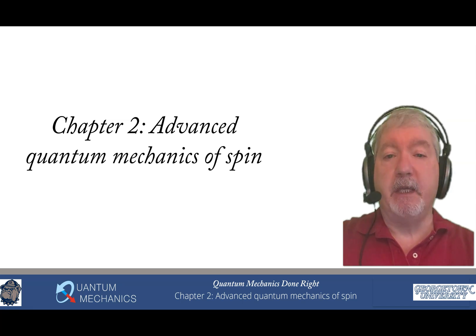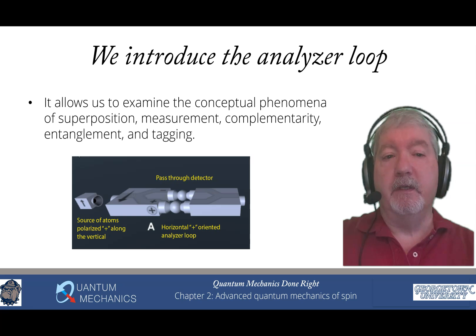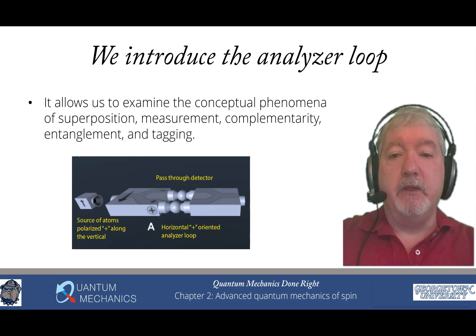So the second chapter is Advanced Quantum Mechanics of Spin, and one of the concepts that we introduced built off of the Stern-Gerlach analyzer that separates the atoms according to their spin is the Stern-Gerlach analyzer loop, which rejoins them after they've been separated. So it seems like this might do nothing, but because you can do something when they're separated, here I've illustrated for you what can happen if you have pass-through detectors that will detect the atoms as they pass through either of the arms in the analyzer loop. And you can do lots of interesting experiments when you add this device into the toolbox that you have to create interesting experiments with spin and the Stern-Gerlach analyzer.